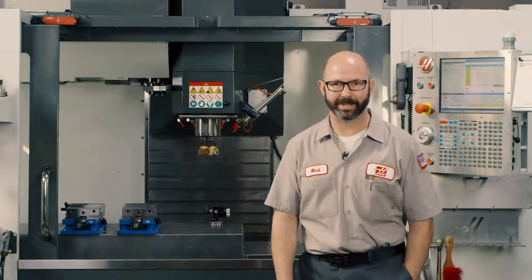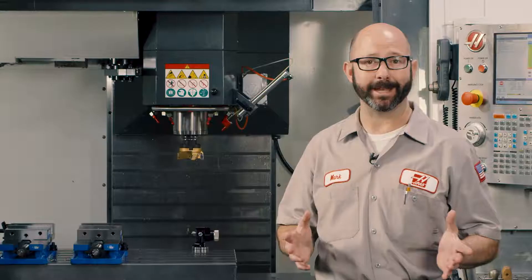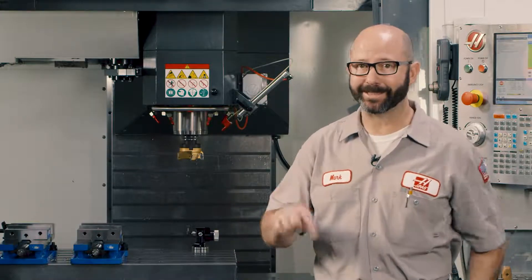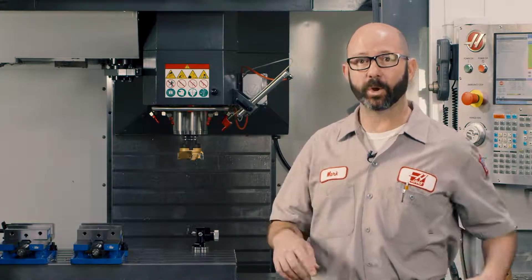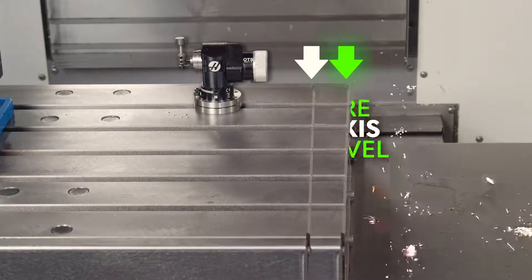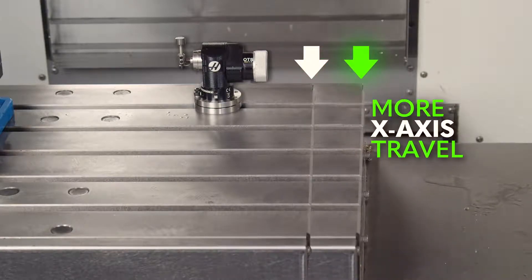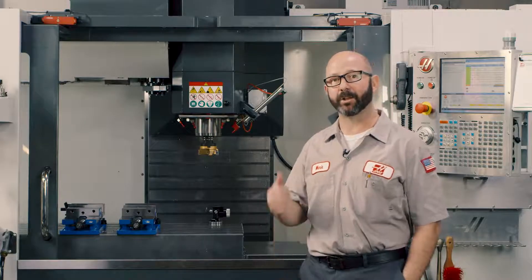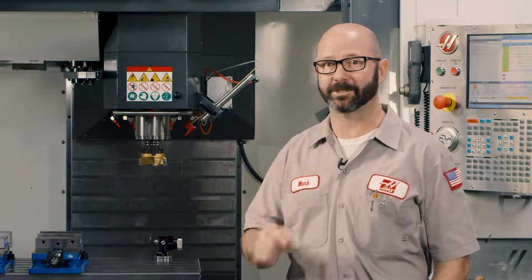Hello and welcome to this Haas tip of the day. Now today's tip is unique. I don't think we've ever done a video like this one. In this video, we're going to give you an extra two inches, an extra 50 millimeters of x-axis travel on your mills. You don't want to miss it, so stick around.